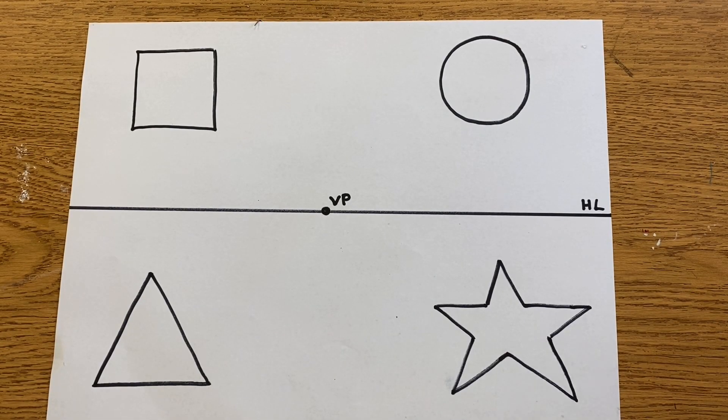Our next project is one-point perspective, a drawing method which helps make shapes appear 3D and shows how things appear to get smaller as they get further away.